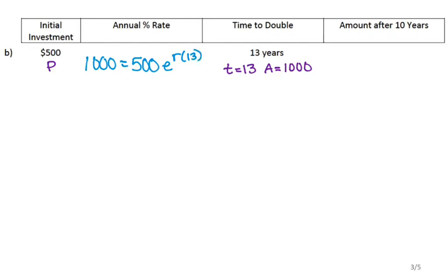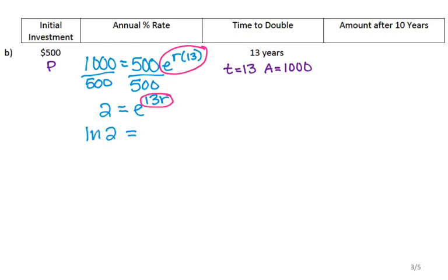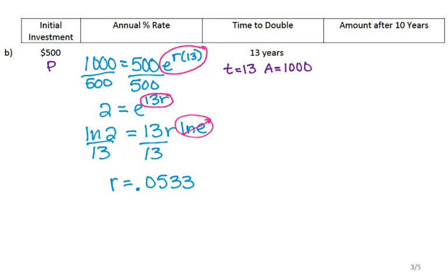I don't know R, so I'll solve for that first. Same as the last one — I isolate my exponential function by dividing both sides by 500. That gives me 2 equals e to the 13R. I take the natural log of both sides, bringing down the exponent, and natural log of e equals 1. So I have 13R equals natural log of 2. Dividing both sides by 13 gives me R equals natural log of 2 divided by 13, which is 0.0533 — or 5.33% as a percentage.